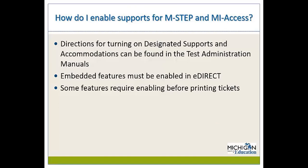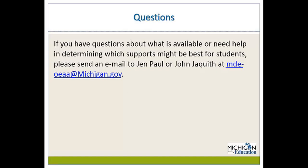To enable supports for M-STEP and MyAccess, directions for turning on designated supports and accommodations can be found in each of the test administration manuals. Embedded features must be turned on in eDirect, unless the feature is a universal tool for that test, such as text-to-speech for MyAccess. It is very important that some features require enabling before printing test tickets, so best practice is to enable all supports and accommodations before printing test tickets. If you have questions, please email Jen Paul or John Jaquith at mde-oeaa@michigan.gov.